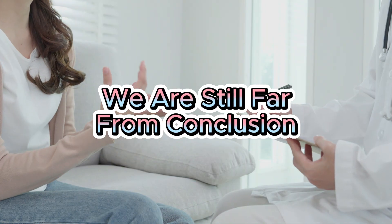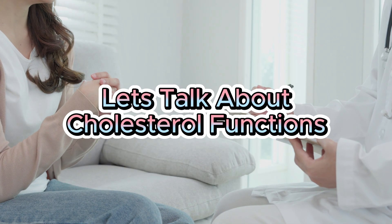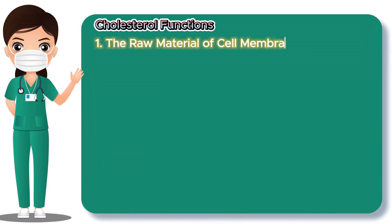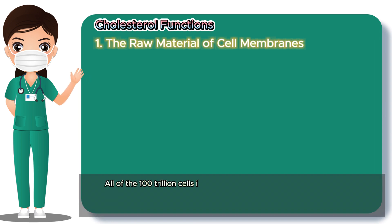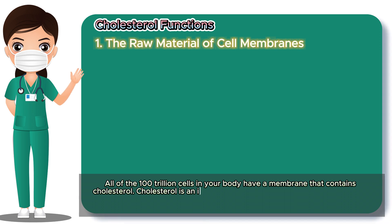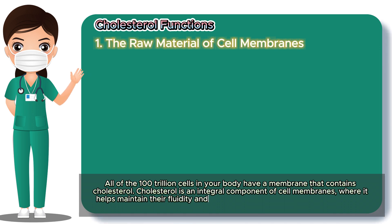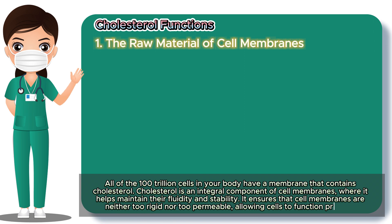We are still far from conclusion — let's talk about the cholesterol functions. Number 1: The Raw Material for Cell Membranes. All of the 100 trillion cells in your body have a membrane that contains cholesterol. Cholesterol is an integral component of cell membranes where it helps maintain their fluidity and stability. It ensures that cell membranes are neither too rigid nor too permeable, allowing cells to function properly.